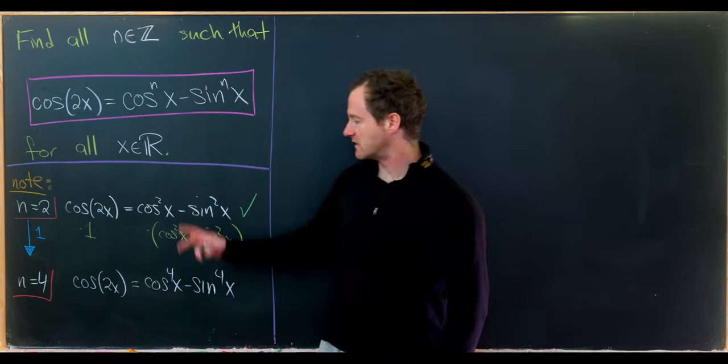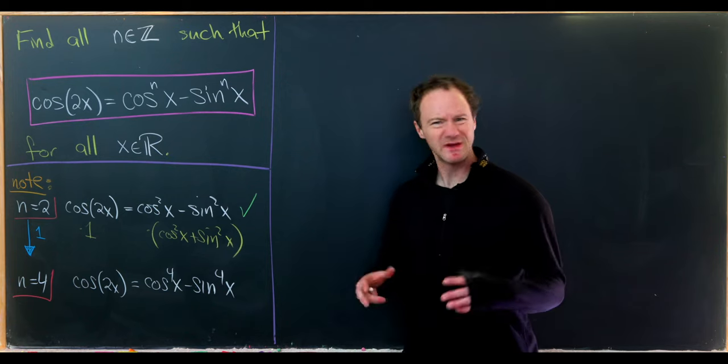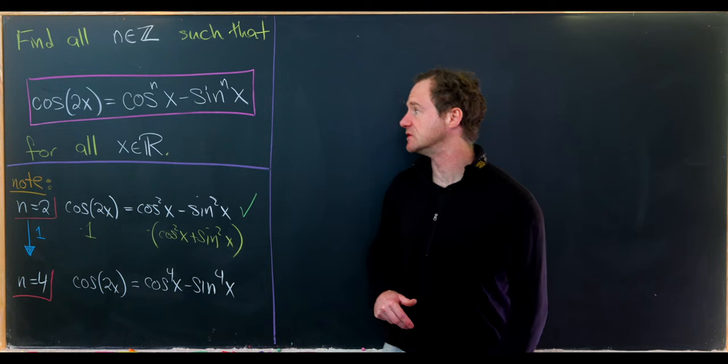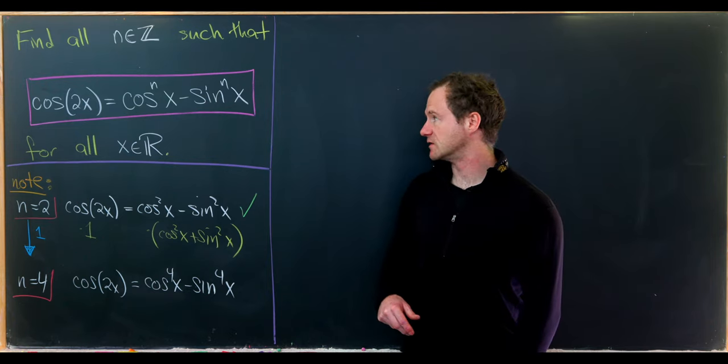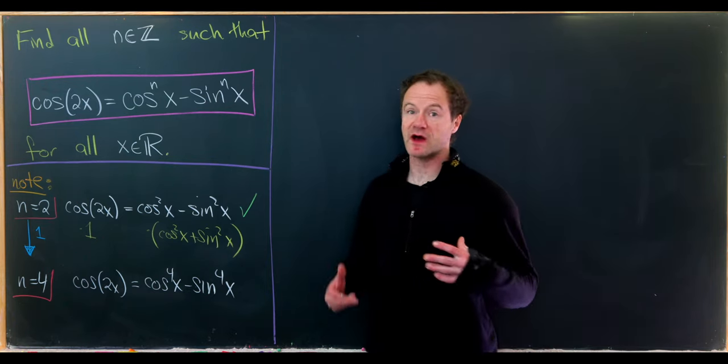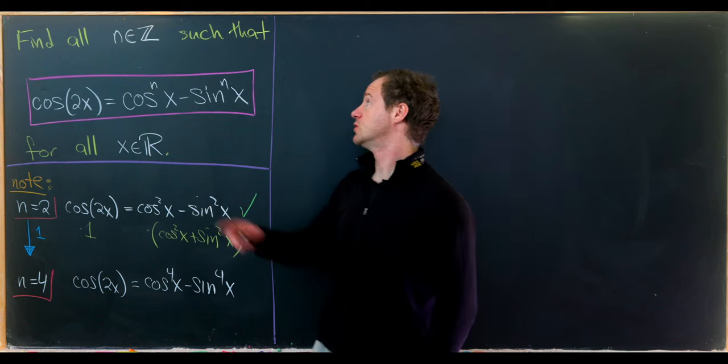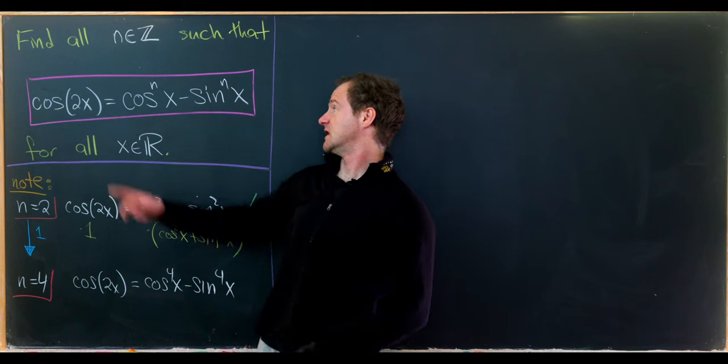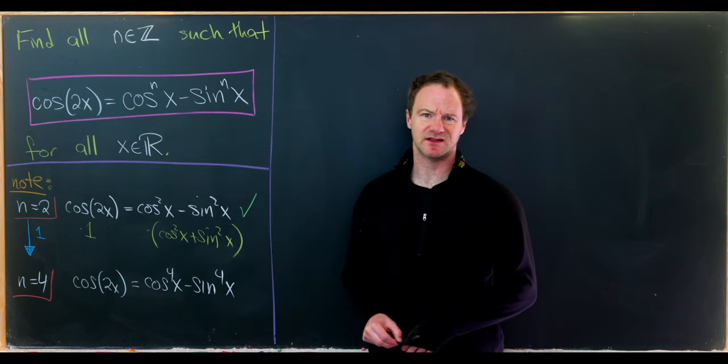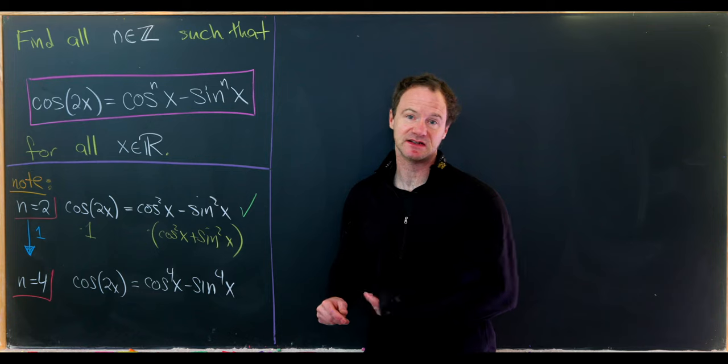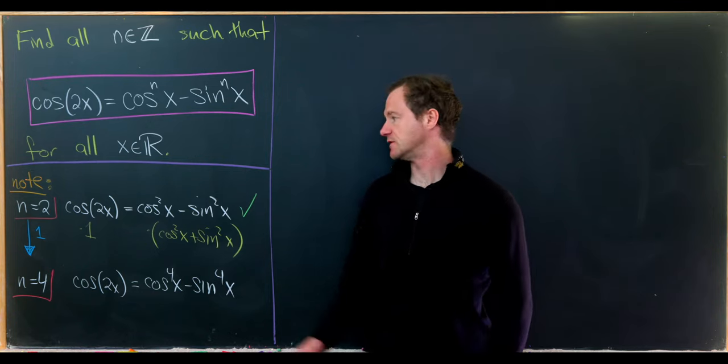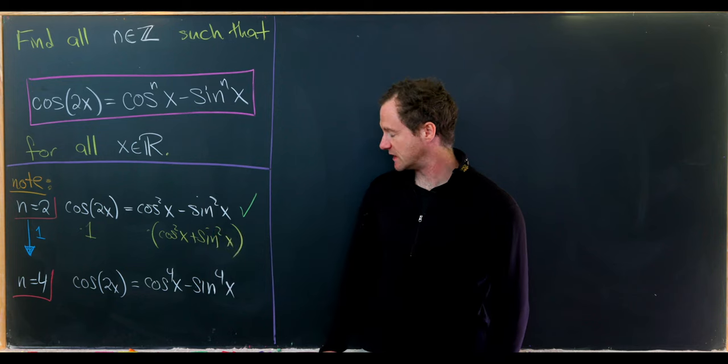Now we could speculate that these are the only two values because these are the most obvious, but there's work to do to show these are in fact the only values. For example, a priori we could have negative integer values. But what we'll see is that none of those other values work and in fact n equals 2 and n equals 4 are our only solutions.